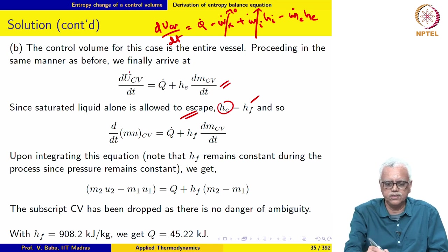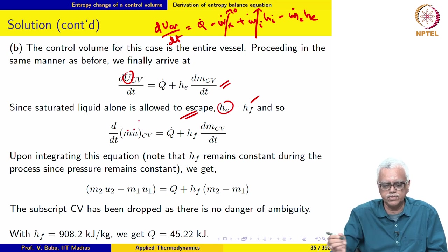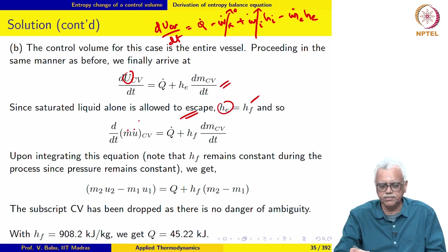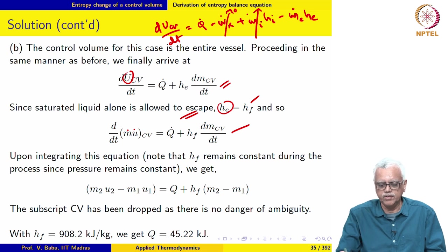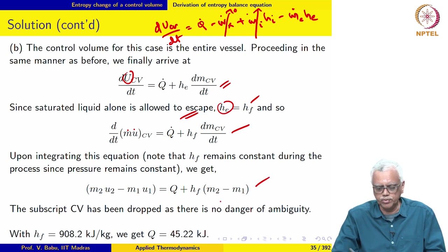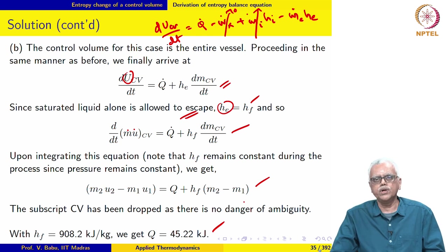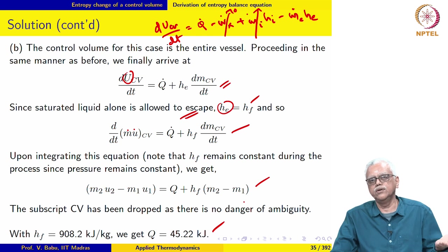We write the total internal energy in the control volume as mass times specific internal energy. With these simplifications the unsteady energy equation is integrated from the beginning to the end of the process. Substituting numerical values, we get Q equal to 45.22 kilojoules — the heat supplied from the reservoir at 250 degree Celsius.